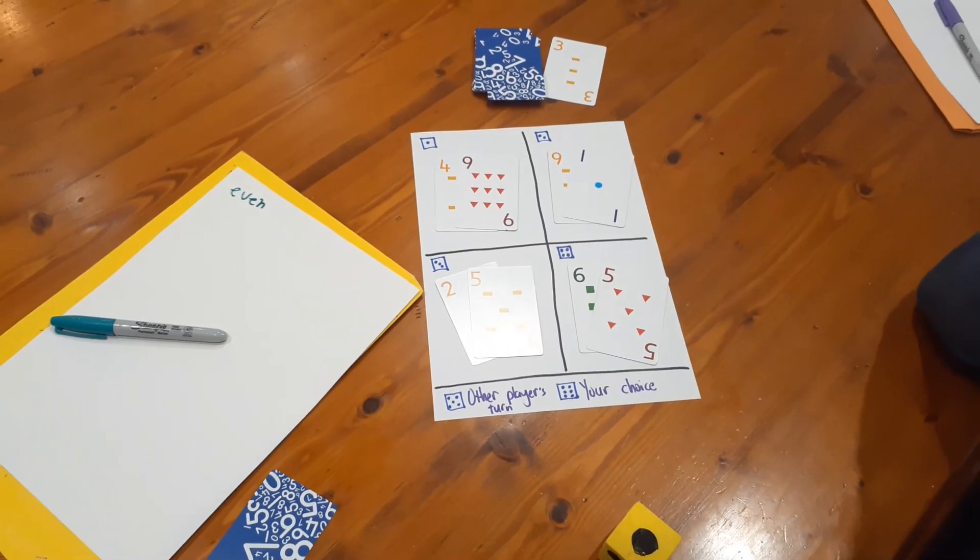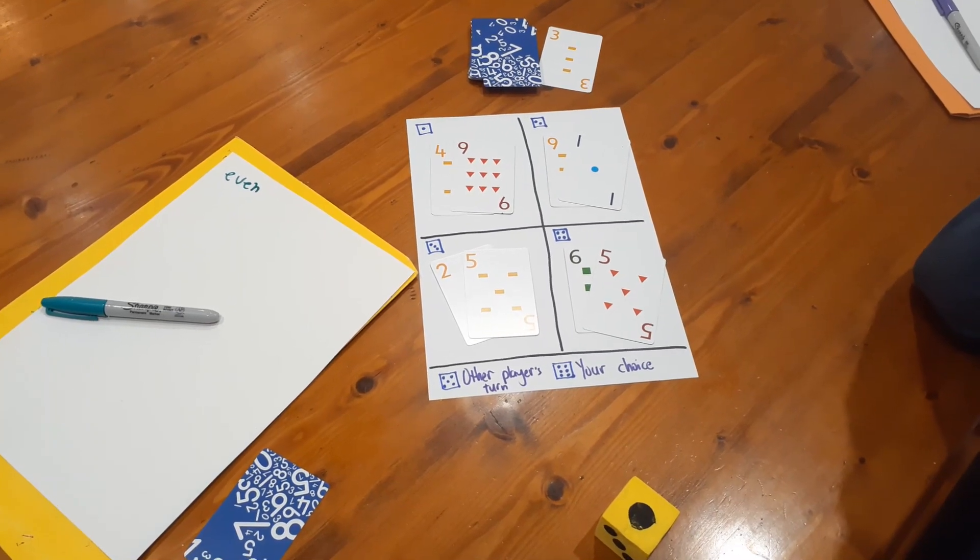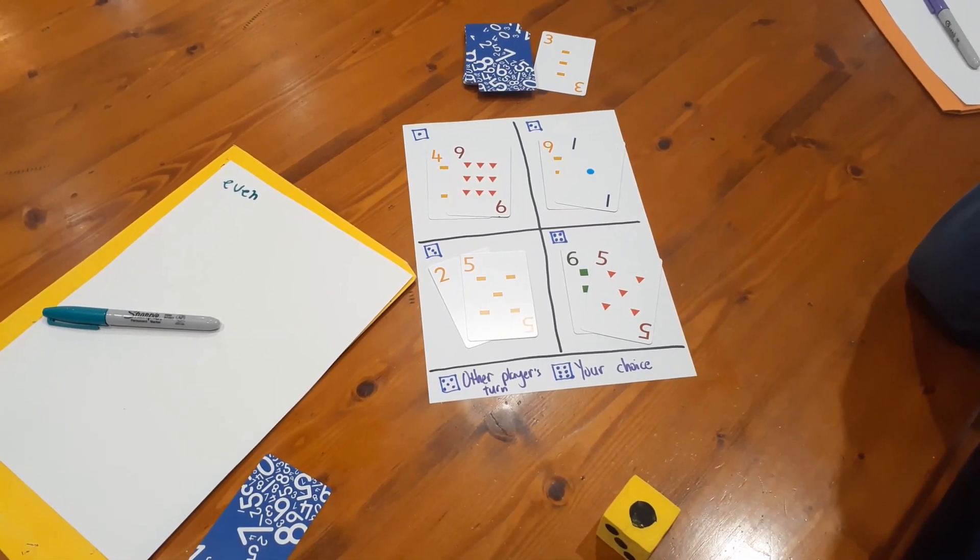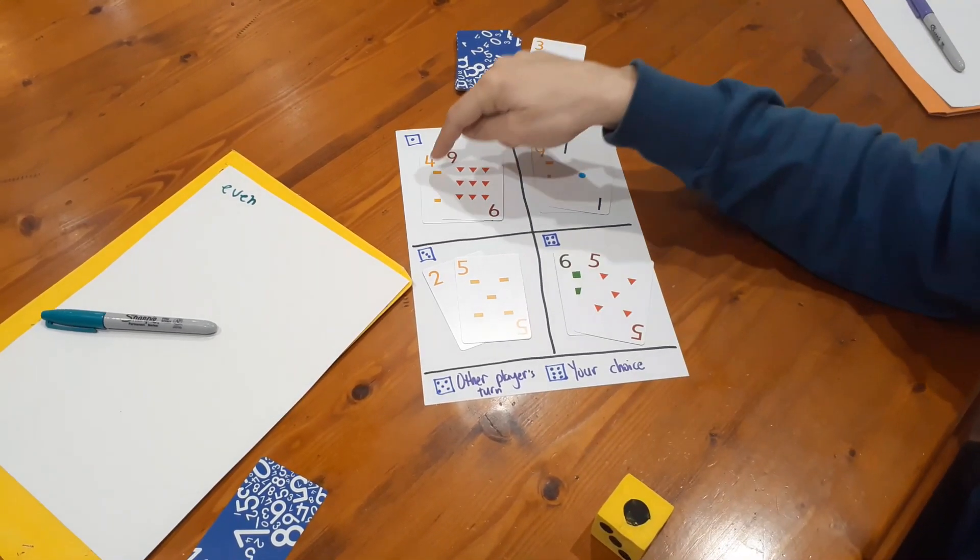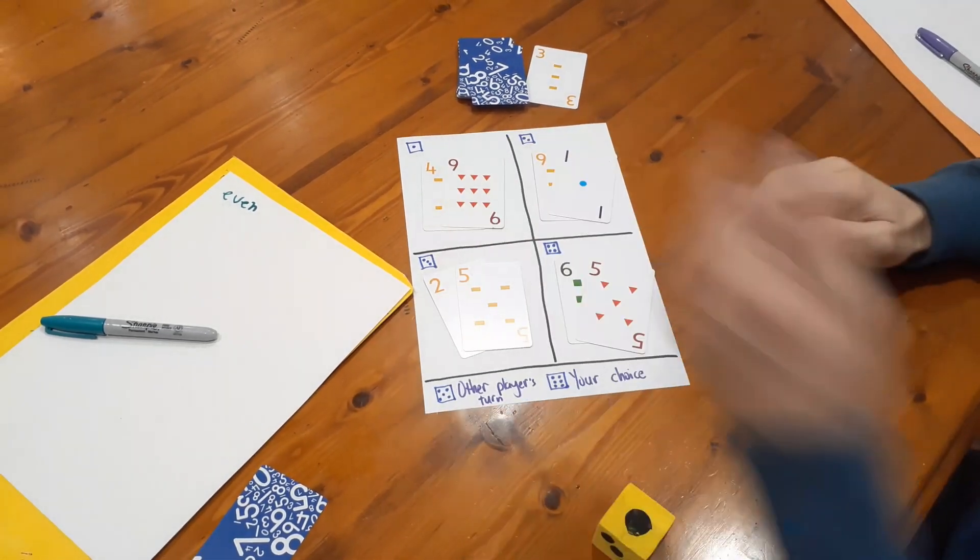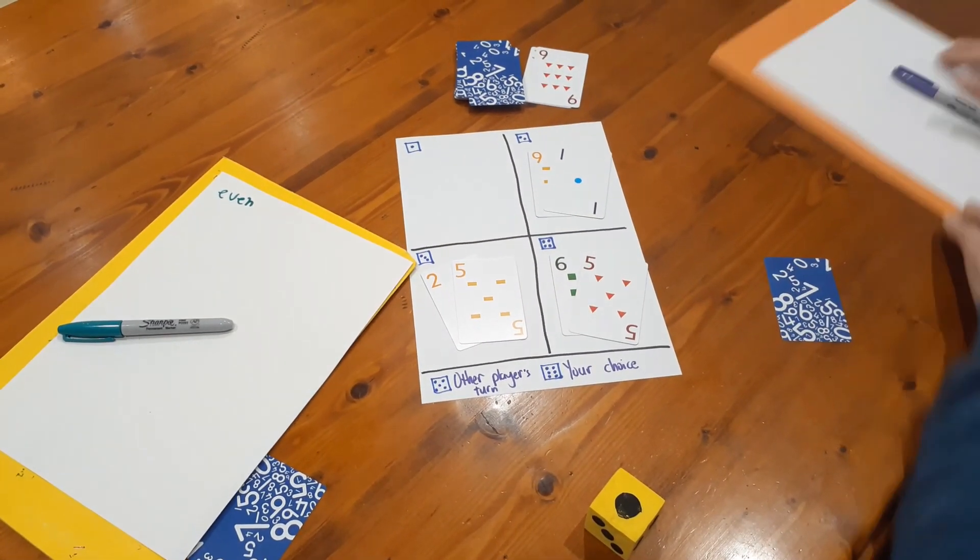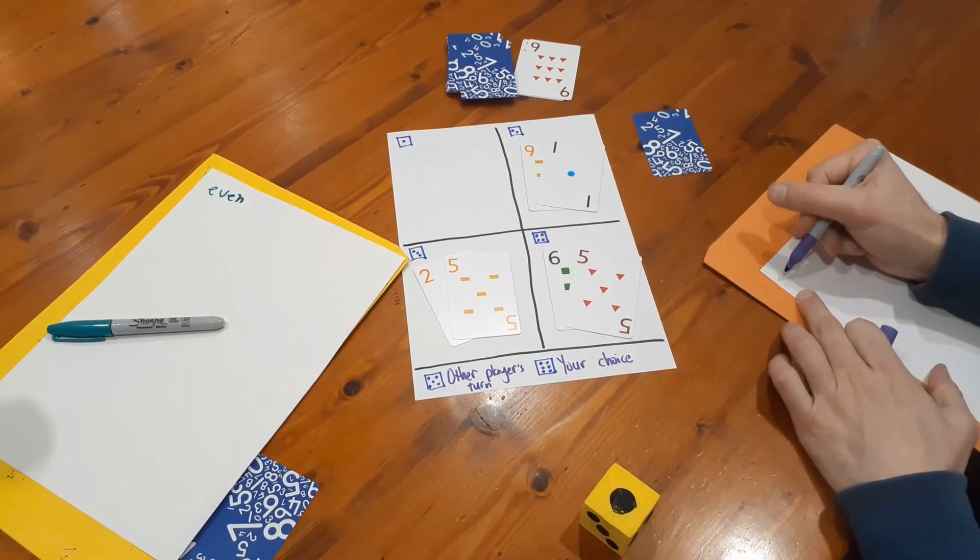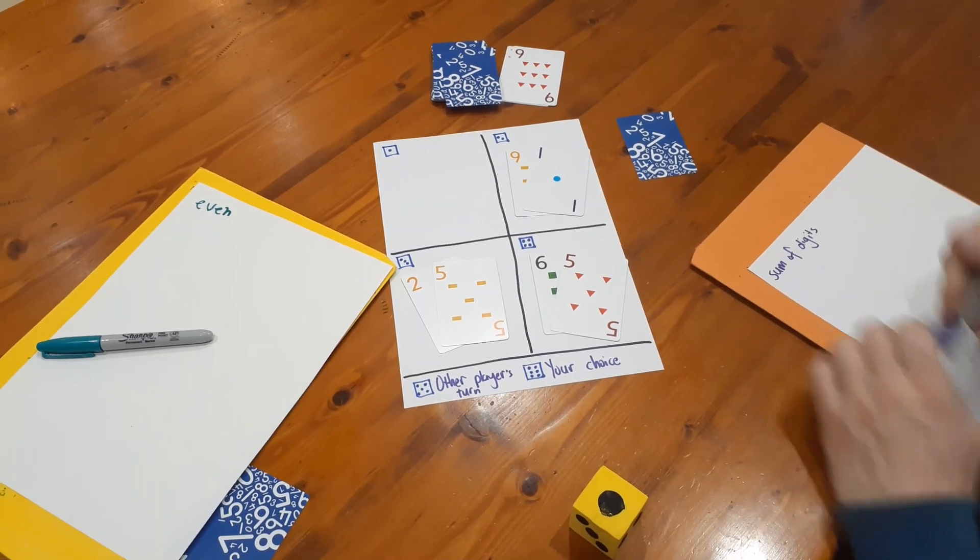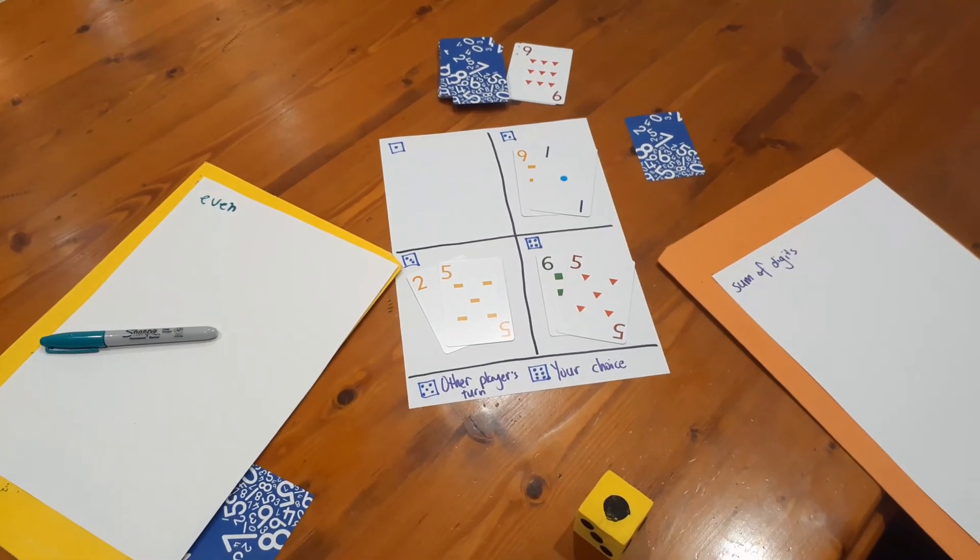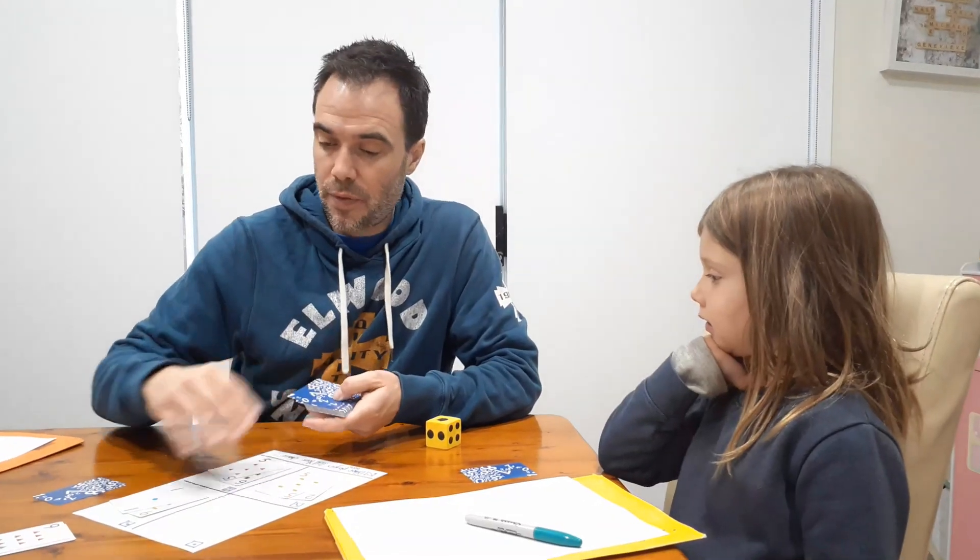Okay so my turn. So I roll a one. I'm gonna say that 49 doesn't belong because it is the only number where the sum of the digits is 13. So I take a card, put a card in the discard pile and for my reason I'm going to write sum of digits. So I can't use sum of digits for any other one, it doesn't matter what, I can no longer use that.